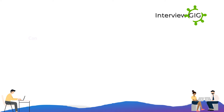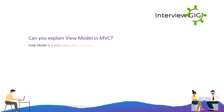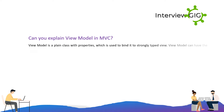Can you explain view model in MVC? A view model is a plain class with properties, which is used to bind it to a strongly typed view. A view model can have validation rules defined for its properties using data annotations.